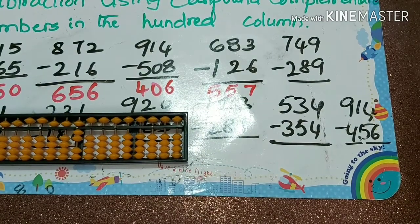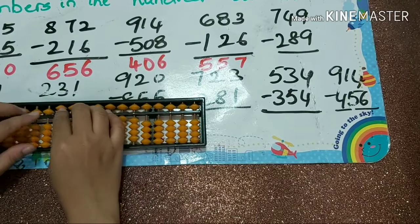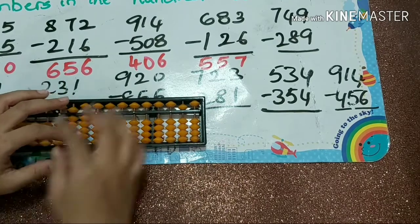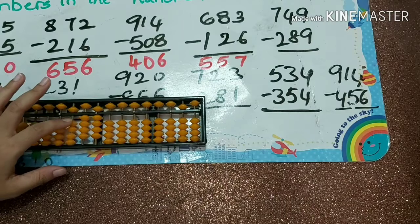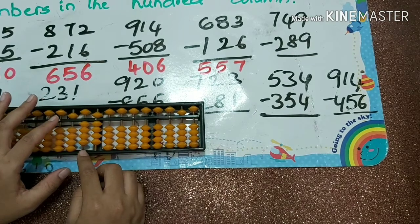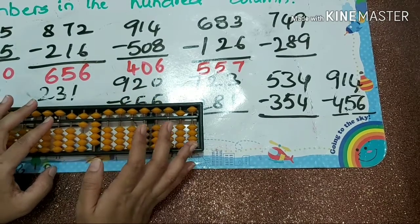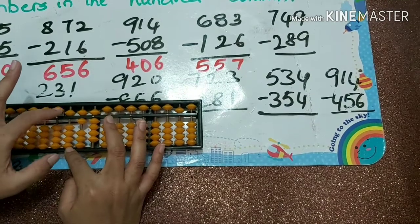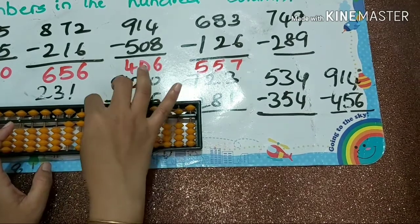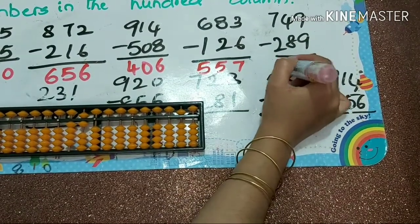Next one: 749 minus 289. Minus 2, then minus 8 — that is minus 10 plus 2, or papa down, mama down, baby's down. Doing mama down and baby's down first, then papa down — which means minus 100, so that is minus 500 plus 400. Next minus 9 by direct method. Answer is 460.